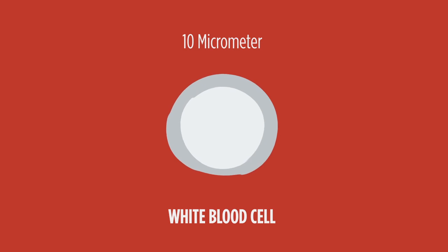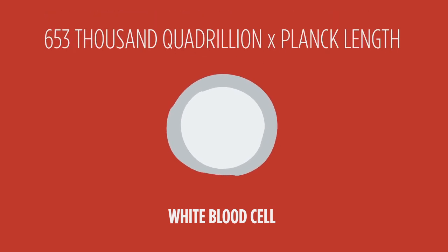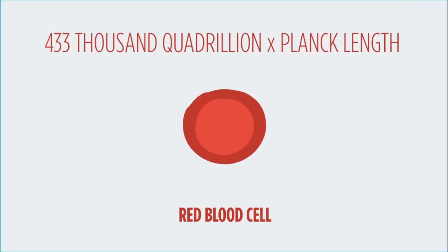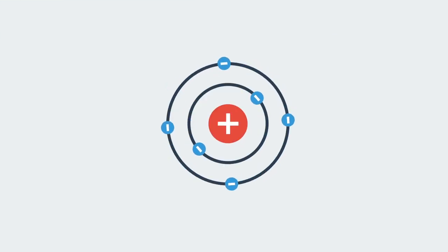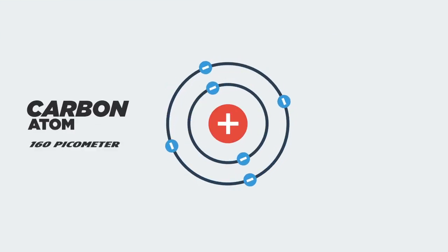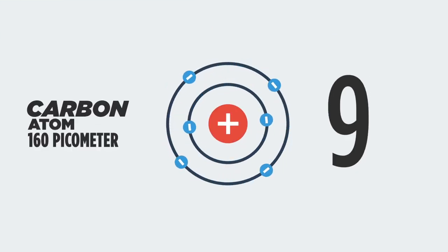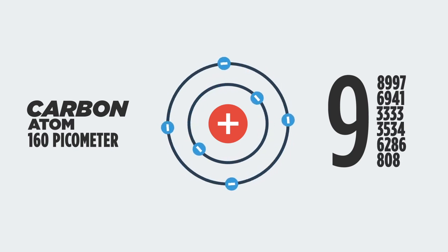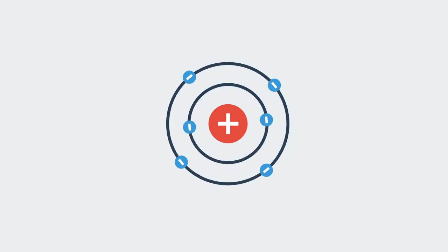A white blood cell, which is a millionth of a metre, is 653,000 quadrillion times larger than Planck length. A red blood cell is 433,000 quadrillion times larger than Planck length. And at 9 septillion times larger than Planck length is the carbon atom, measuring in at 160 picometres.